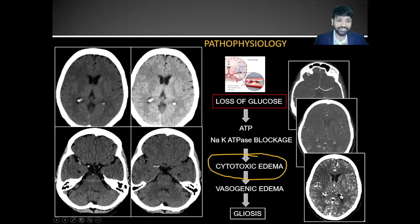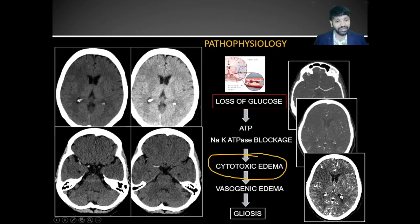Once you view the vascular structures, adjust the window settings to the parenchymal level. You will then be able to appreciate the hypodensities in the parenchyma much more easily compared to the plain images. As you can see, it is much easier to appreciate the hypodensities and loss of gray-white matter differentiation in the post-contrast images compared to the plain images.